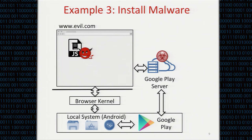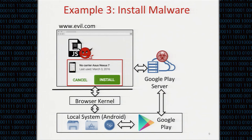The third attack can install malicious applications on the victim's mobile device. Google Play provides a way that a user can log in and choose different applications to install. The Google Play client-side software on the mobile device then downloads and installs those applications silently. The attacker can load Google Play into an iframe, redirect to a specific page for malware, and trigger an install button. With the help of Google Play's server and client-side application, this malware will be silently installed on the victim's mobile device without the user's consent.